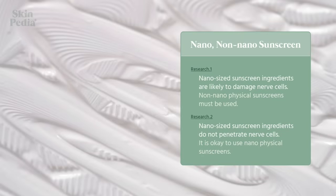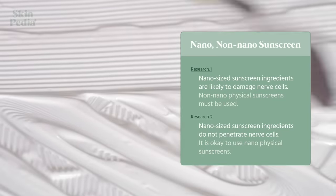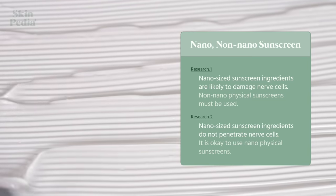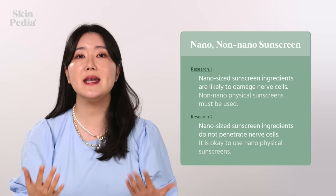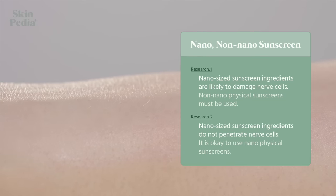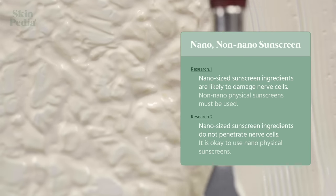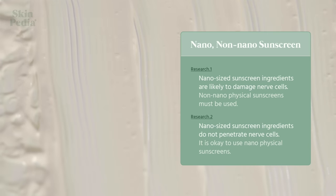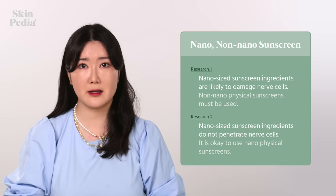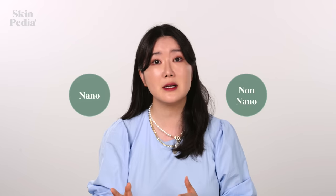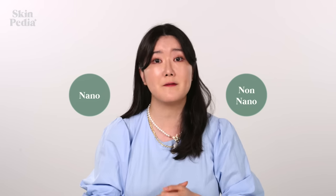In some studies, it's said that there is a possibility that nano-sized physical sunscreen ingredients may damage nerve cells. However, other studies say that nano-sized physical sunscreen ingredients may not damage nerve cells. Both zinc oxide and titanium dioxide either do not penetrate or minimally penetrate the stratum corneum and underlying layers of the skin, suggesting that systemic absorption — and hence toxicity — is very unlikely. In the Korean beauty industry, non-nano-sized physical sunscreens are preferred. There are cases where you can find the word nano or non-nano written on the product, packaging, or product details page for physical sunscreens.